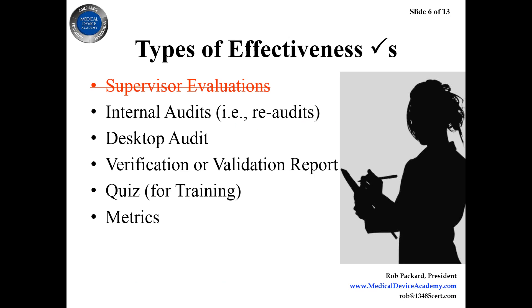One method the FDA likes to see — especially when there's an internal audit finding — is a re-audit. You had a non-conformity or a 483, you implement a CAPA, and then you go back and audit that one area; it might be a very short audit. But if the problem happened at a supplier in another state or country and you don't want to go on-site, you could do a desktop audit instead. That's another valid option.